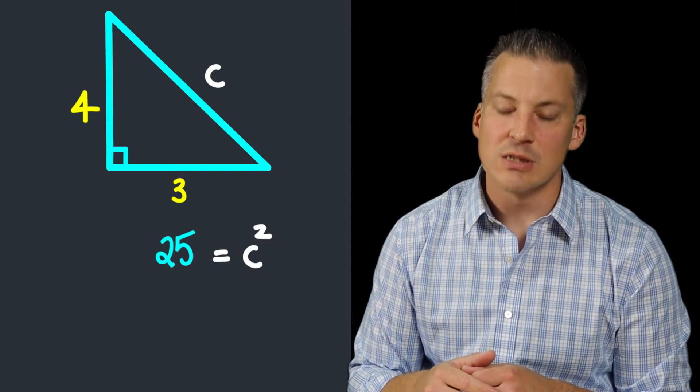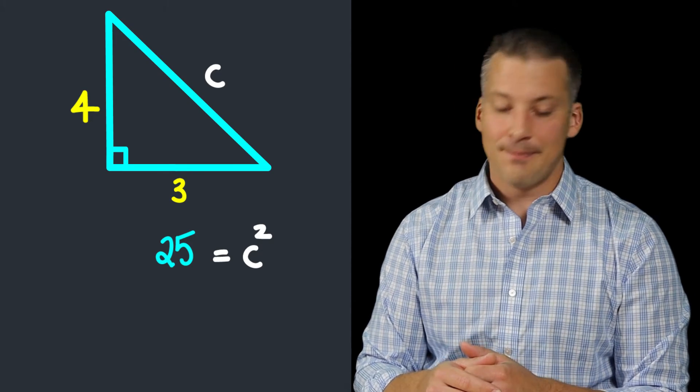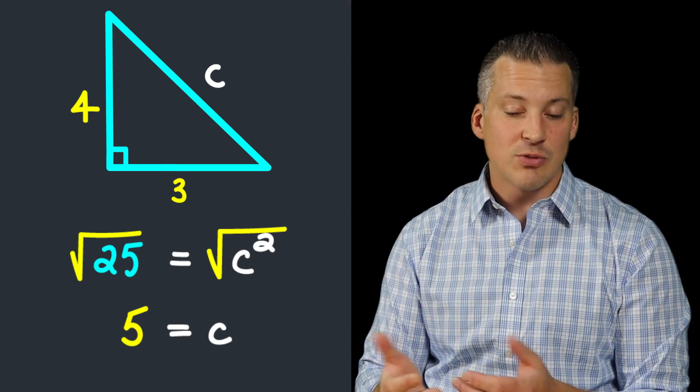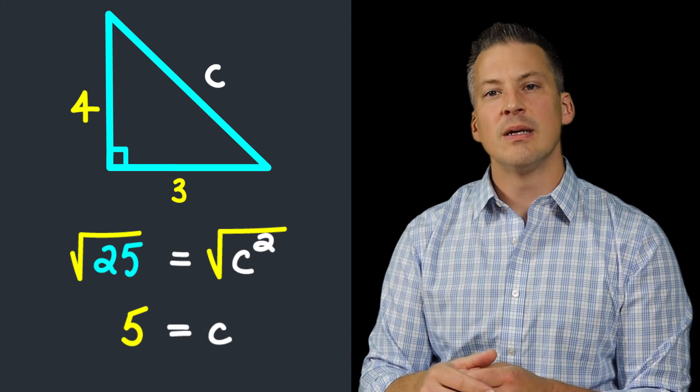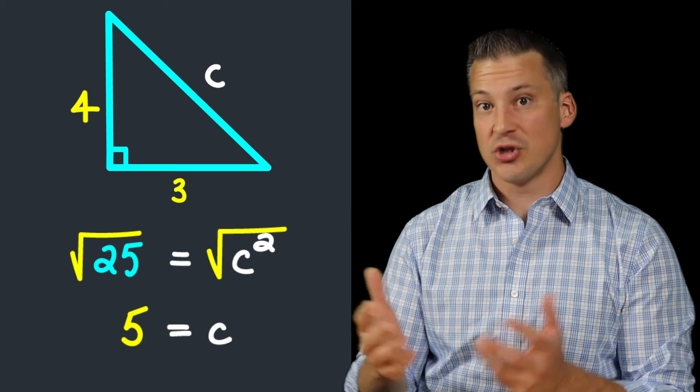I know I'm running through this. And what do we get? Yeah, 5, right? When we take the square root of both sides, because we want to find just c and not c², the square root of 25 is 5, and the square root of c² is just c.